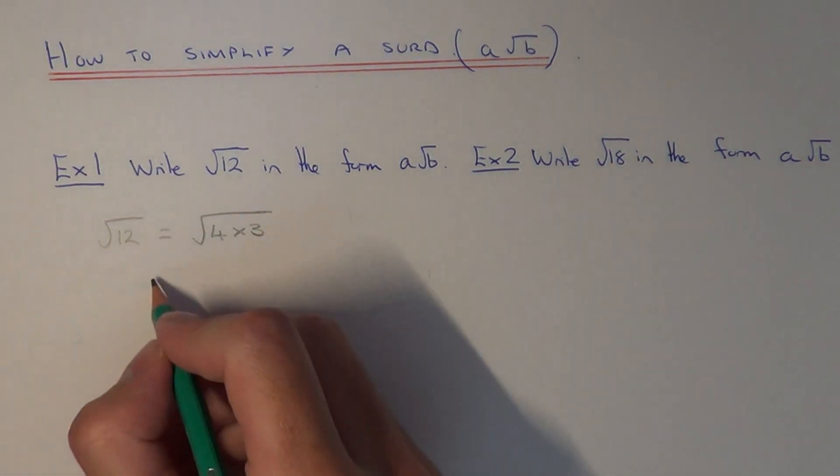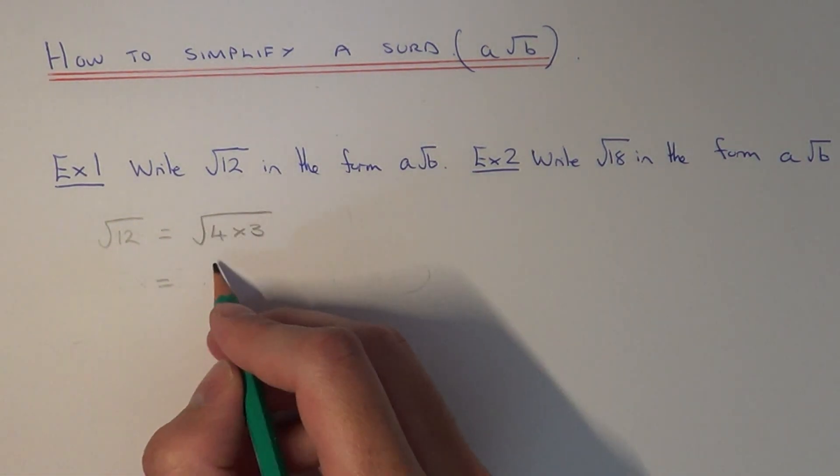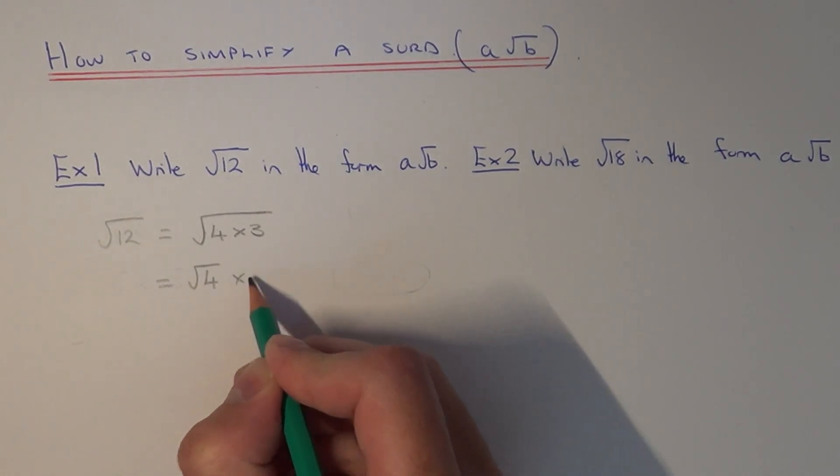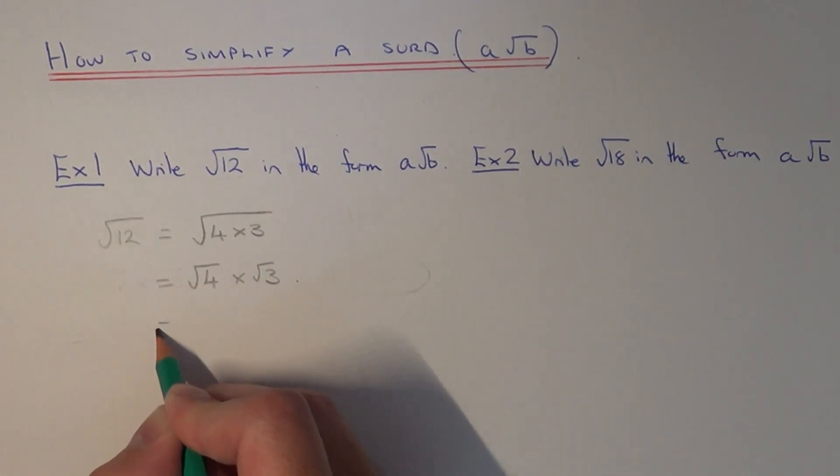So once we've done this, we can break this up as root four times root three. And this is the reason why we picked out the square number, because we can square root it.